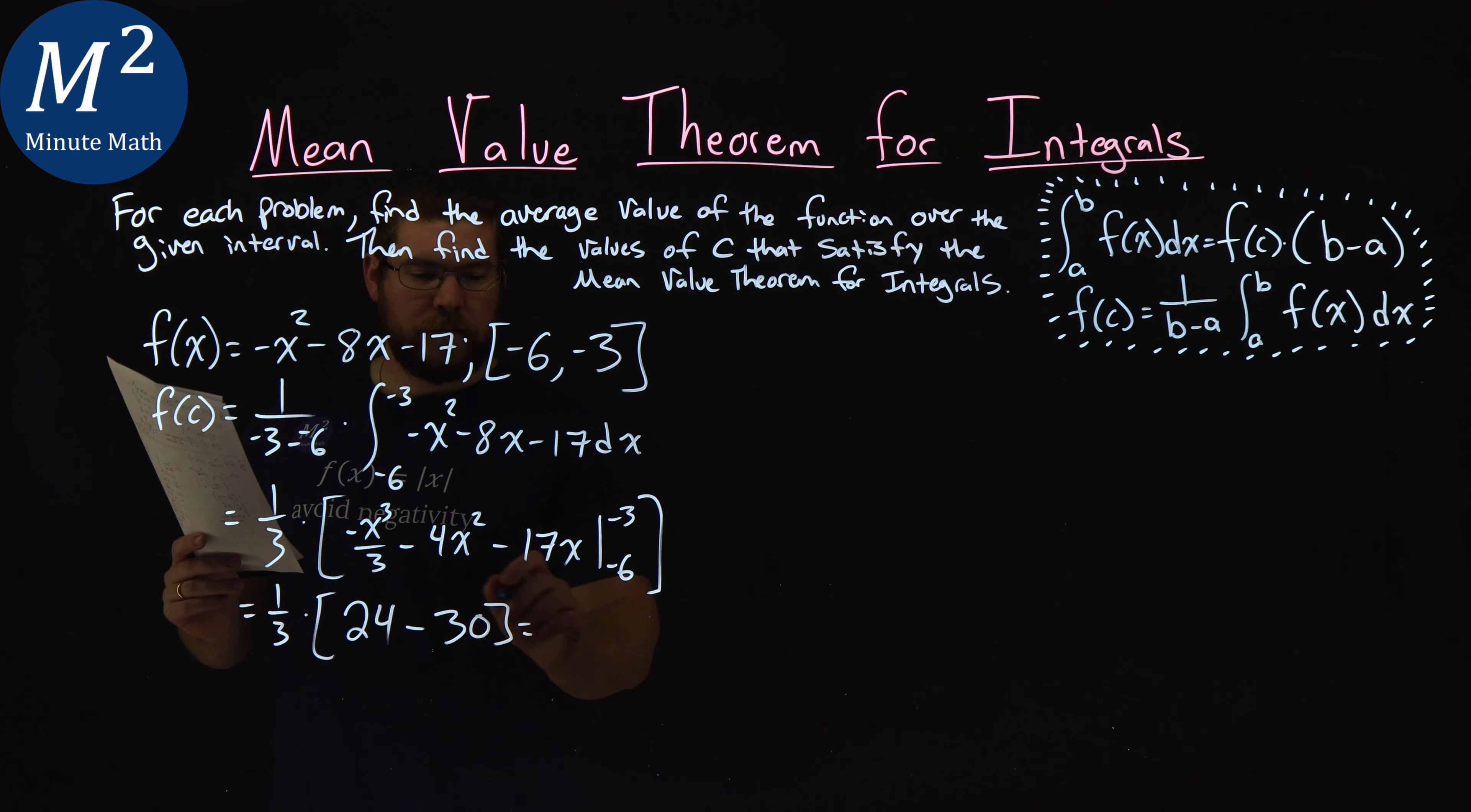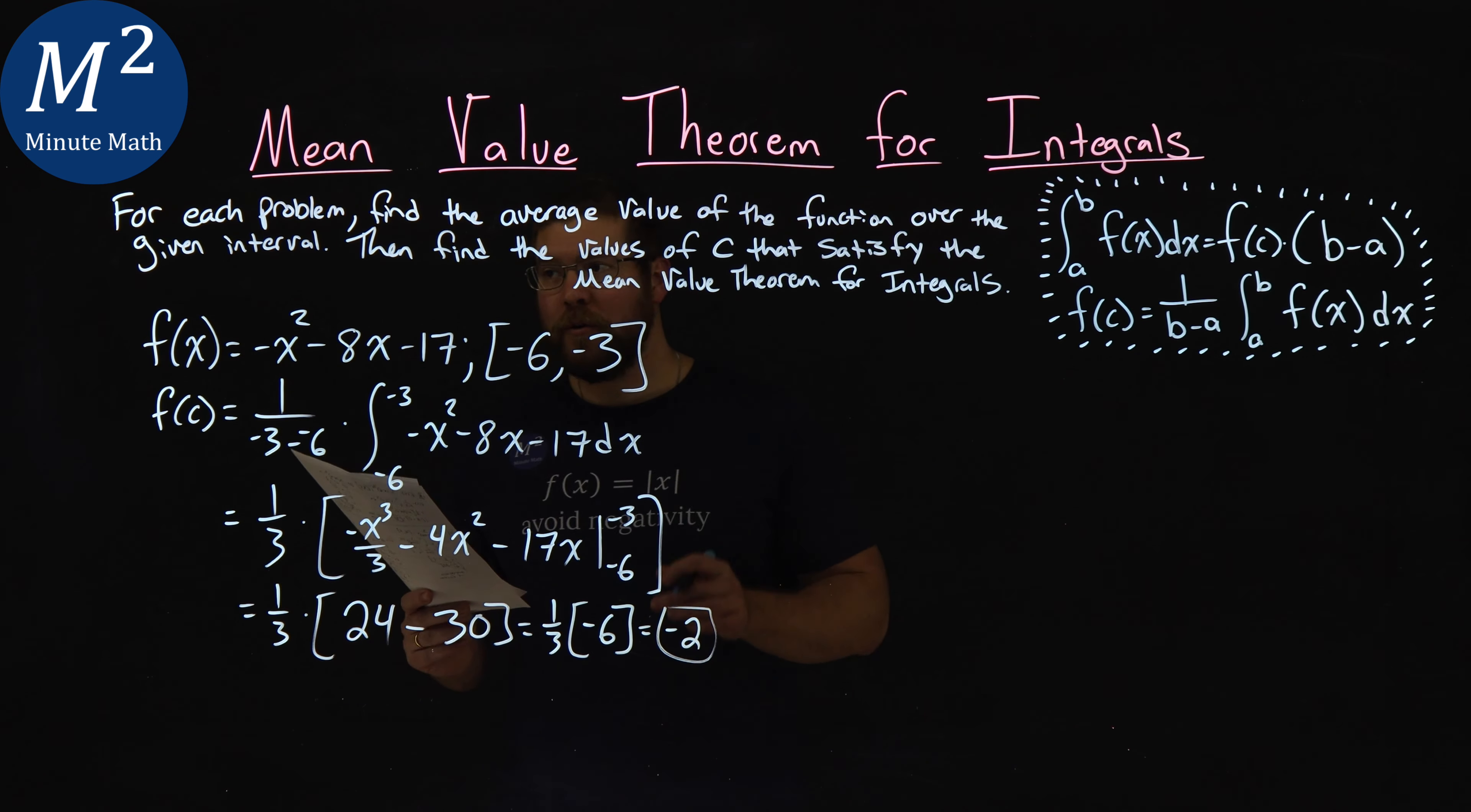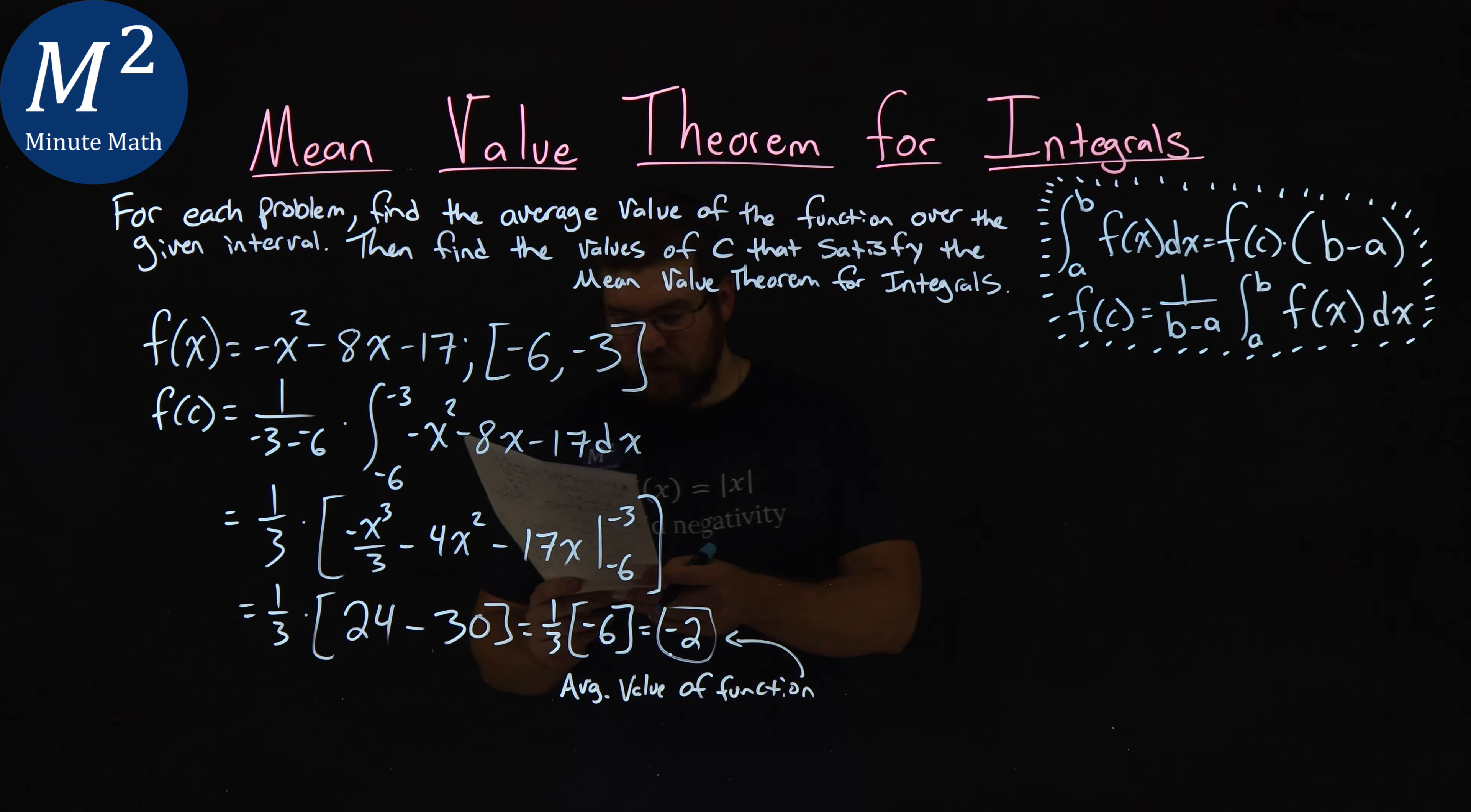Well, 1 third stays out front. Multiply that by 24 minus 30, which is negative 6. And 1 third times negative 6 is negative 2. And so negative 2 is our average value. So this here is our average value of the function. That's negative 2. So we found the first part.